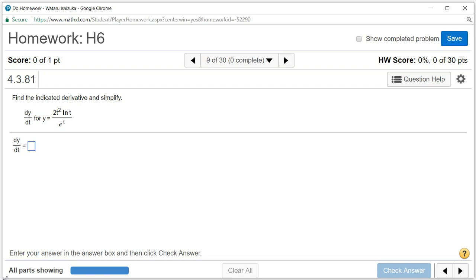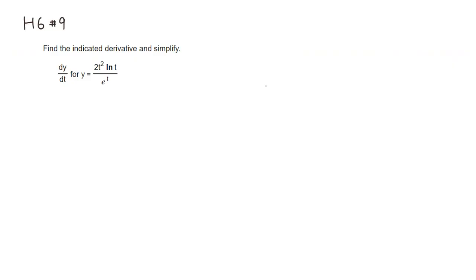Let's look at Hallmark 6, problem number 9. We want to find the derivative of this function with respect to t. So we have a quotient here, so I'm going to use the quotient rule. Before we do that, I'm going to put this 2 — it's just a constant — in front. So I'm going to look at it as 2 times t squared times natural log of t, over e to the t.